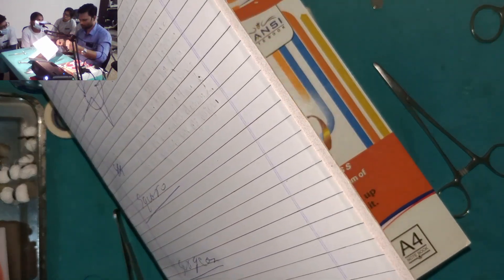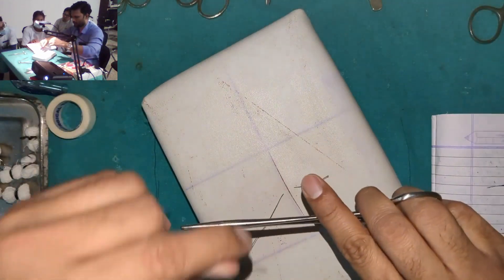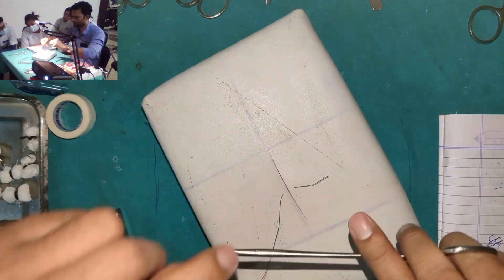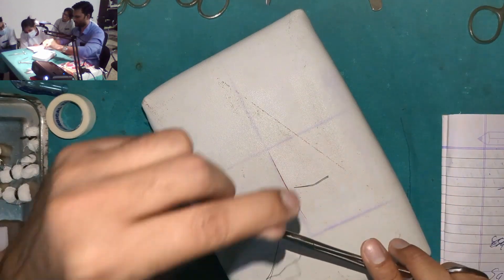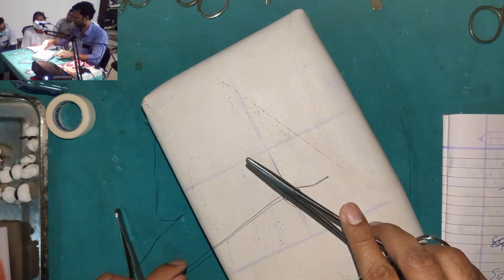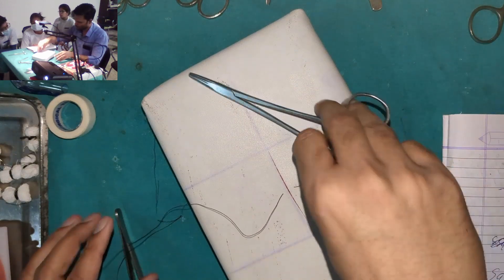So square knot, what happens? This act is called a throw. The thread that we're placing over the needle holder is called a throw.